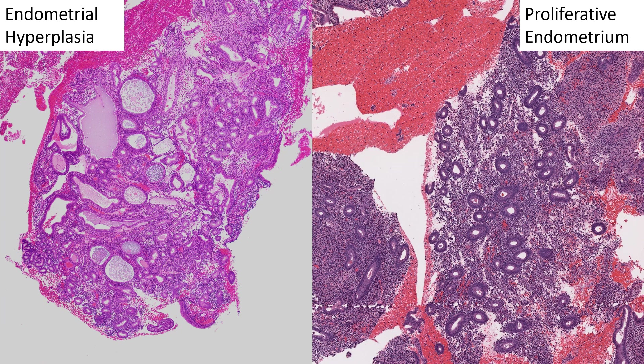Here are some real-life examples. On the left-hand side of your screen, you have endometrial hyperplasia, and you can see just at low power there is a high density of endometrial glands — the area of those glands is going to outnumber the stroma. And if you look at the proliferative endometrium on the right, you can see just at low power that there's more stroma than glands, so that's an okay ratio.